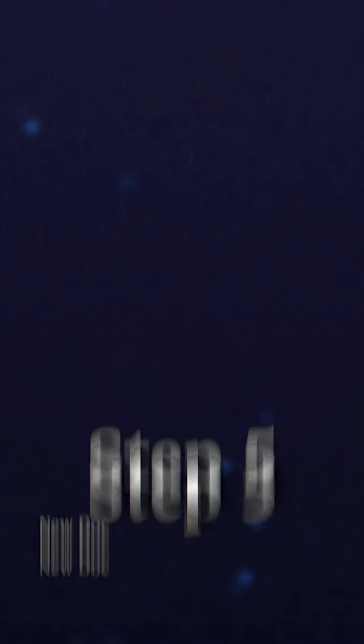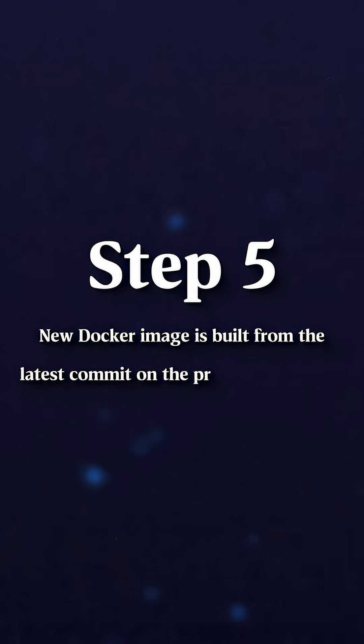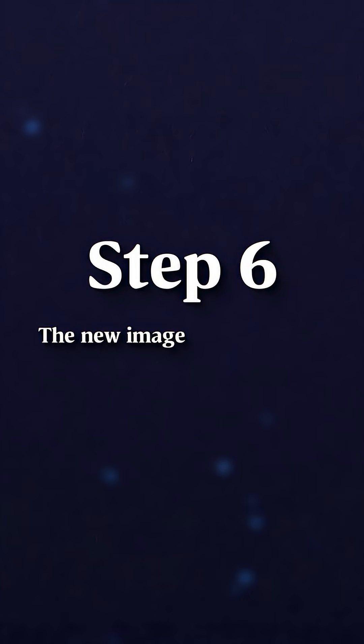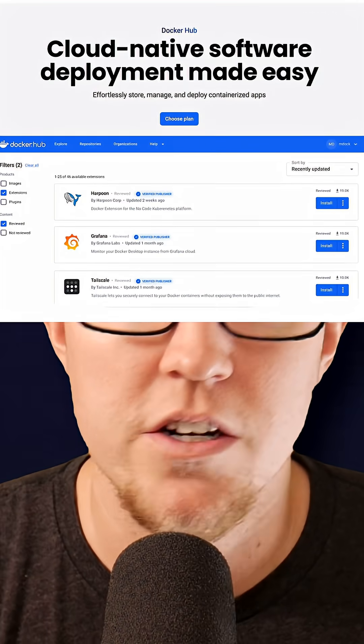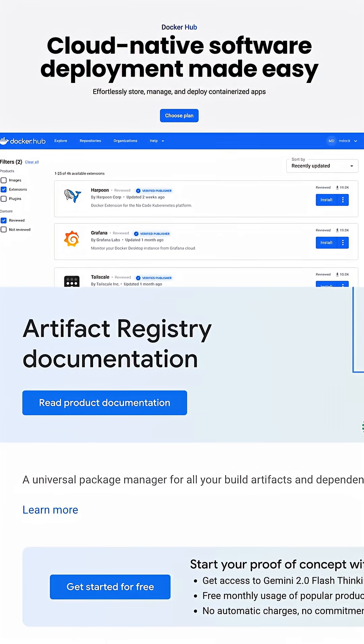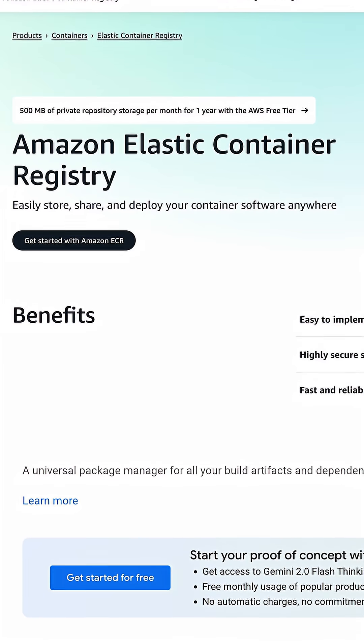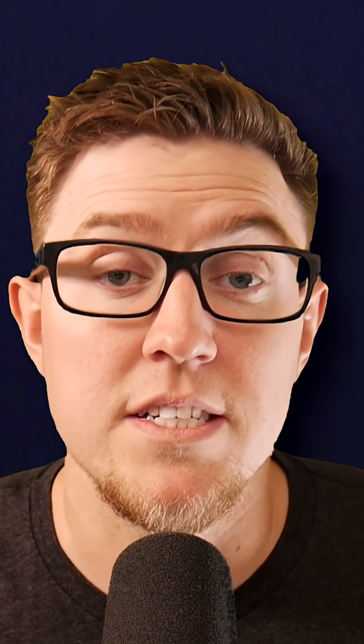Step five — and ideally this is automated, but it doesn't have to be — a new Docker image is built from the latest commit on the production branch. Step six, the new image is pushed to a container registry. This could be Docker Hub, Google Artifact Registry, or AWS Elastic Container Registry.